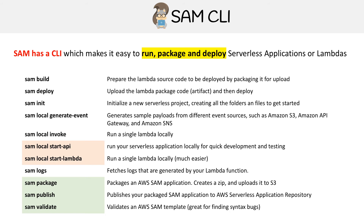Then you have generate-event, which I think is for testing — I've never used it, but you get different payloads for your event sources. Then you have invoke, which runs a single Lambda locally. Then you have start-api, which runs your service application locally for quick development. Then you have start-lambda, which is very similar to invoke, but I would probably say you'd more likely want to run start-lambda than invoke.